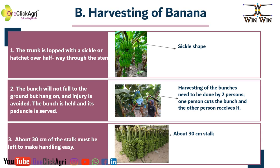Next, harvesting of banana. It is very easy. First, the trunk is lowered — you see here the sickle is hatched halfway through the stem. You will find here this is hatched halfway through the step.